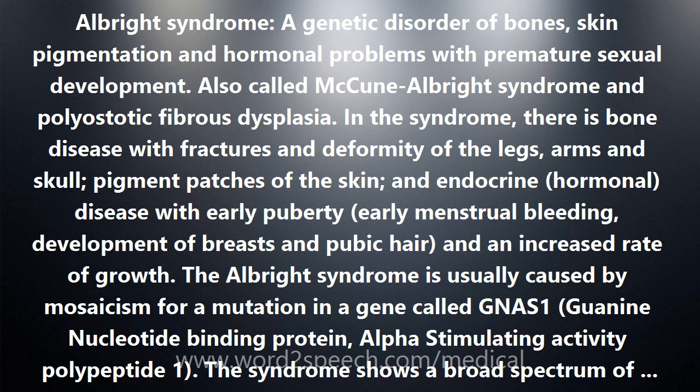In the syndrome, there is bone disease with fractures and deformity of the legs, arms, and skull, pigment patches of the skin, and an endocrine — hormonal — disease with early puberty, early menstrual bleeding, development of breasts and pubic hair, and an increased rate of growth.